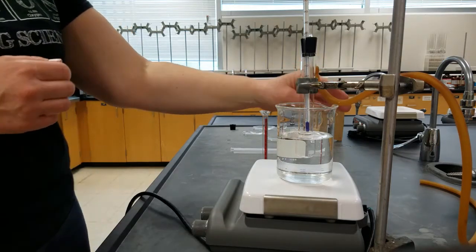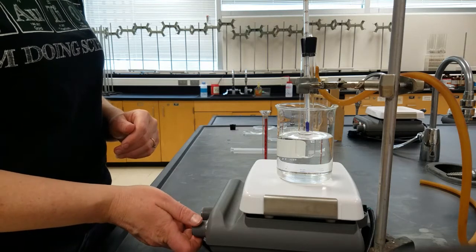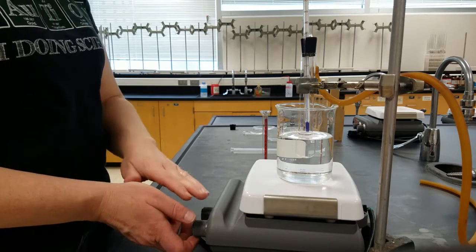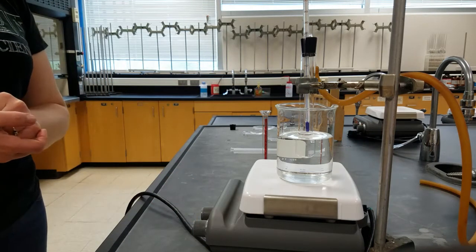We want to be careful that our rubber tube does not touch our hot plate because the tube is made out of material that can melt. We're going to turn this on and wait for our unknown to boil.